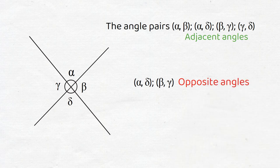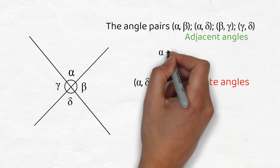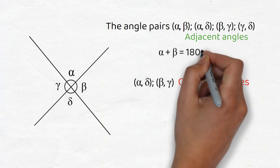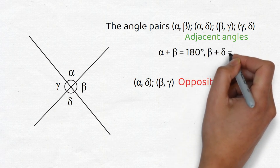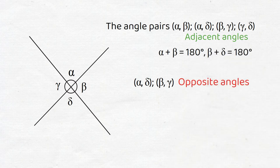Since adjacent angles form a straight angle, they have to add up to 180 degrees. So we can say α + β = 180°, and β + δ = 180°, etc.